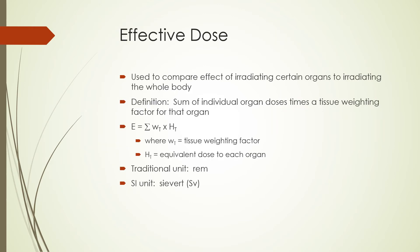We can refine further the concept of equivalent dose by taking into account the effect of radiation on specific organs in an individual, so as to estimate the overall detriment to the individual. We use the term effective dose for that. The effective dose is used to compare the effect of irradiating certain organs to irradiating the whole body. It accounts for cancer mortality as well as hereditary effects. Effective dose is equal to the equivalent dose multiplied by a tissue weighting factor for each organ. The traditional unit is the REM and the SI unit is the sievert, where one sievert is equal to 100 REM.